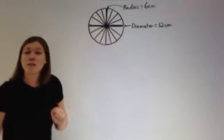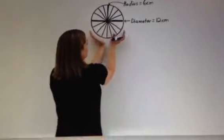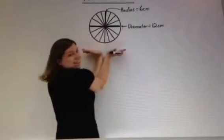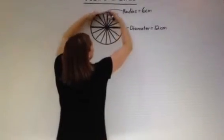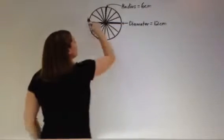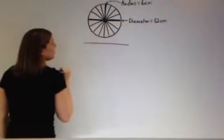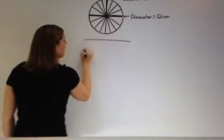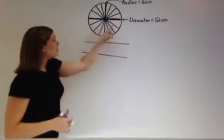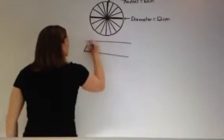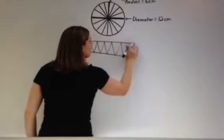Then we take each one of these pieces and lay them out flat. We take the bottom curve of our circle and flatten it out, and we do the same with the upper curve. When we take the upper curve and lay it out flat, we get a straight line. When we lay the bottom curve flat, we get another line. Each of these slices fans out, and the upper slices and the lower slices link together, forming a parallelogram.